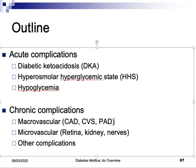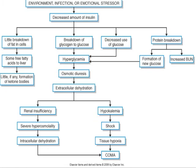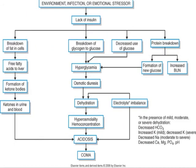Now I will start with acute complications. Looking at these two tables: in one there is decreased insulin — that is hyperosmolar hyperglycemic state — and in the other there is a lack of insulin, which is diabetic ketoacidosis. Whenever there is a lack of insulin, there will be breakdown of fat in the cells, breakdown of glycogen to glucose — essentially the opposite of what insulin normally does.